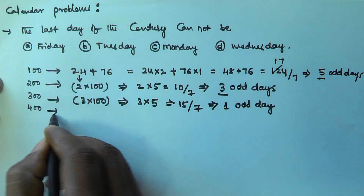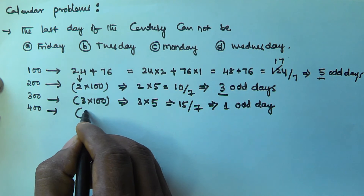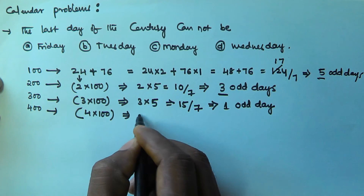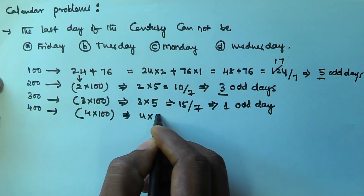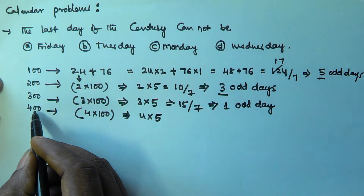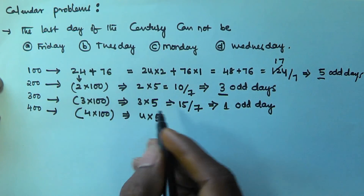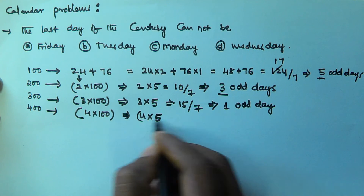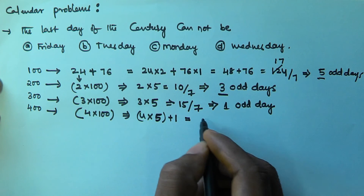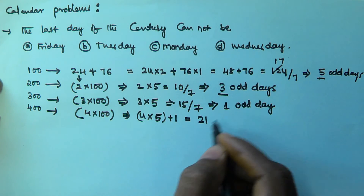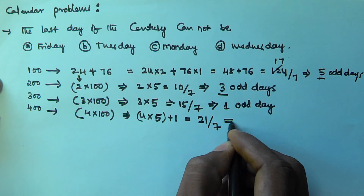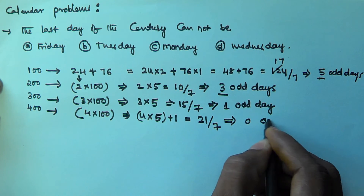For 400 years, that is 4×100, giving 4×5 = 20 odd days. But the 400th year is actually a leap year, so we add 1 extra odd day, making it 21 odd days. Dividing 21 by 7, the remainder is 0. So 400 years contains 0 odd days.